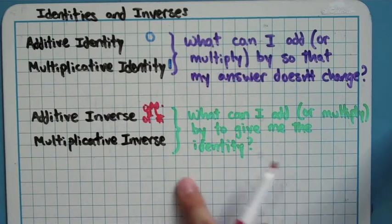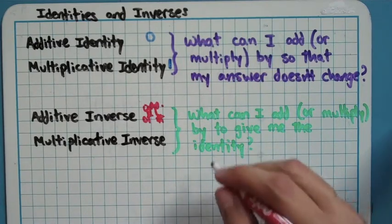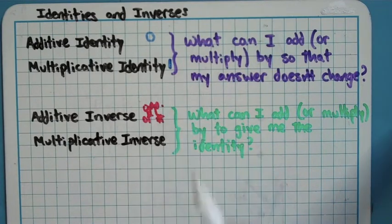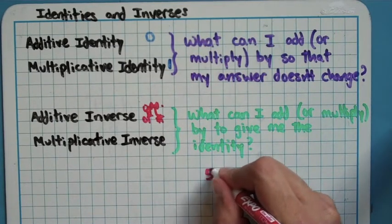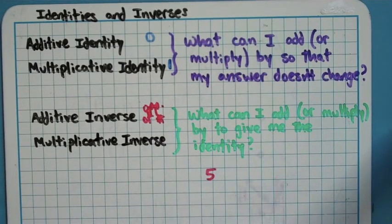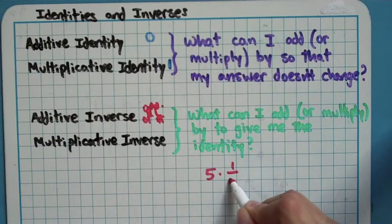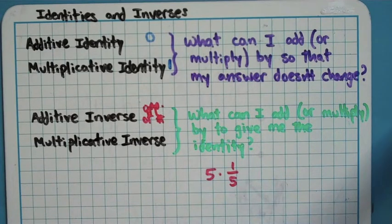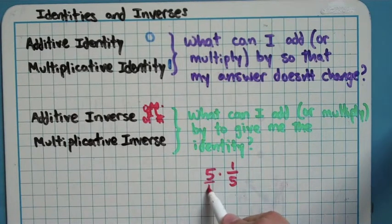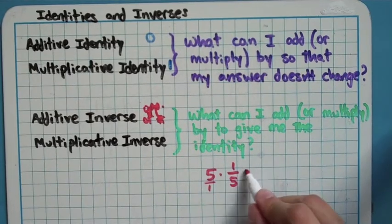For multiplying, when we're talking about a multiplicative inverse, we want to know what can we multiply by to give us 1 for our answer. So, if I start with a 5, 5 times what equals 1? And, it may take a little bit more thought to come up with this one, but it turns out that 5 times 1 over 5, if you just do the reciprocal, you're going to get 1 when you multiply. Because, this is 5 over 1, you just get 5 over 5, which equals 1.